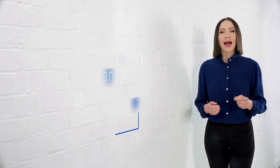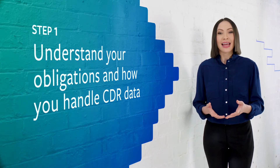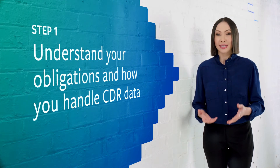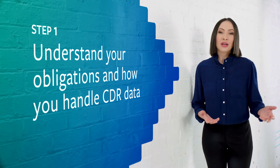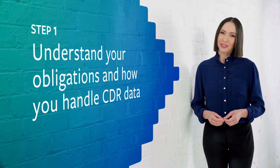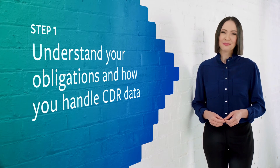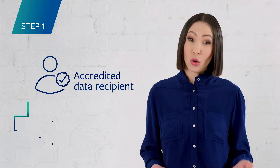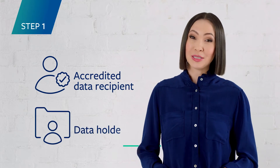There are six steps to developing a CDR policy. Step one: understand your obligations and how you handle CDR data so you can accurately describe it to your customers. The information you must include in your CDR policy depends on whether your business is an accredited data recipient or a data holder.